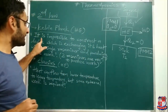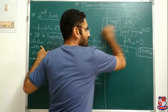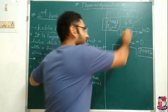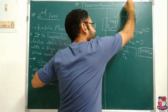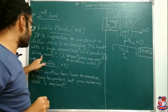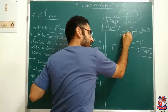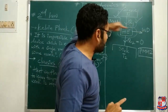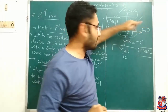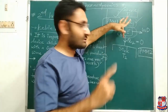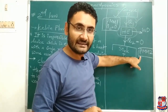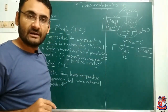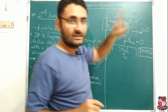It is impossible to construct a device which exchanges its heat energy with a single reservoir and produces work. To produce work with a heat engine, two reservoirs are required. Then only work can be produced, and that machine is PMM2. If a heat engine produces work with only a single reservoir, that is PMM1 — which is not possible. So PMM1 is impossible.